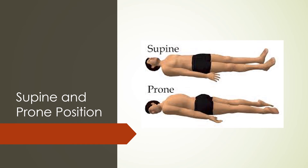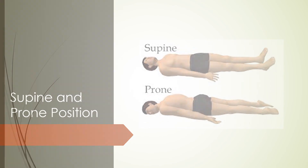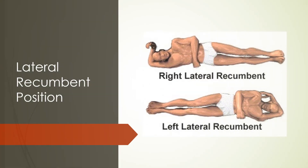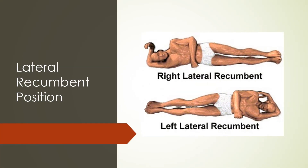These are other positions that you're going to need to know. Supine means laying on your back, and prone means laying on your abdomen or your stomach. The lateral recumbent positions are basically laying on your right side and laying on your left side, like you would when you sleep.